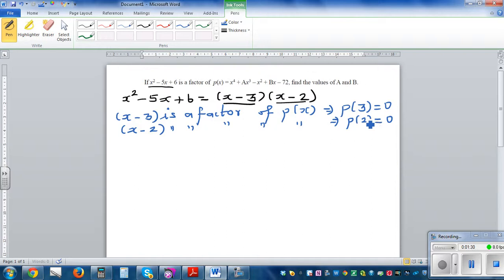Basically what you have to do is find p(2) and set that equal to 0, and p(3) set that equal to 0. You're going to get simultaneous equations, solve it, and that's all. You can pause this video if you can do the rest.